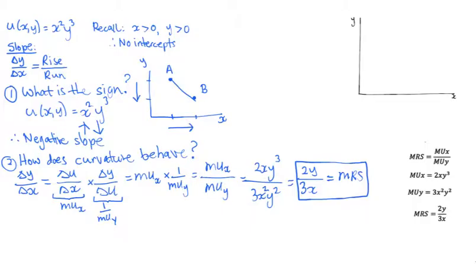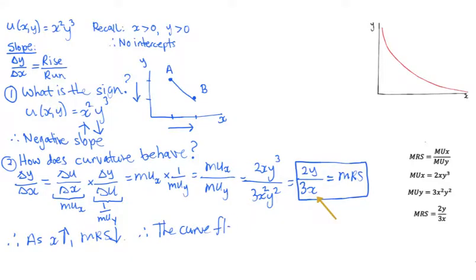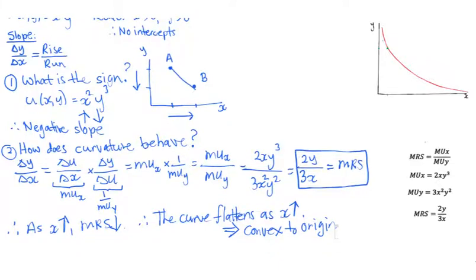How does this slope change as x increases? Well, we can see here that x is in the denominator. So when the x value increases, the marginal rate of substitution is going to go down. In other words, the curve is flattening as x increases. We can say that the indifference curve is convex to the origin, it bends.